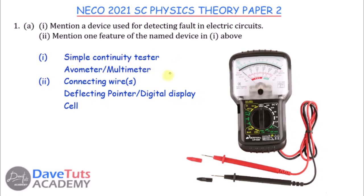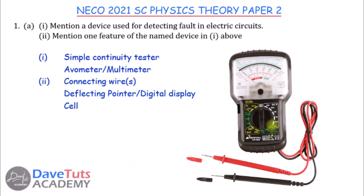You can also use a simple continuity tester. The continuity tester only checks if there is no breakage in a conducting wire — you put one end here and the other there, and the device gives a beep sound to confirm no breakage. A multimeter or avometer can also do that, but in addition it can measure current, voltage, resistance, and more. You can switch to whichever setting is suitable for what you want to measure.